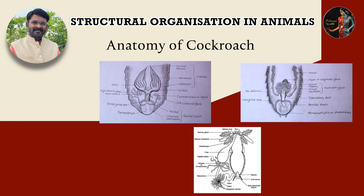The cockroaches are coelomate animals, but the true coelom occurs only in the embryonic stage. The coelom is a cavity. The body cavity is filled with hemolymph and is called as hemocoel. Blood is called as hemolymph.